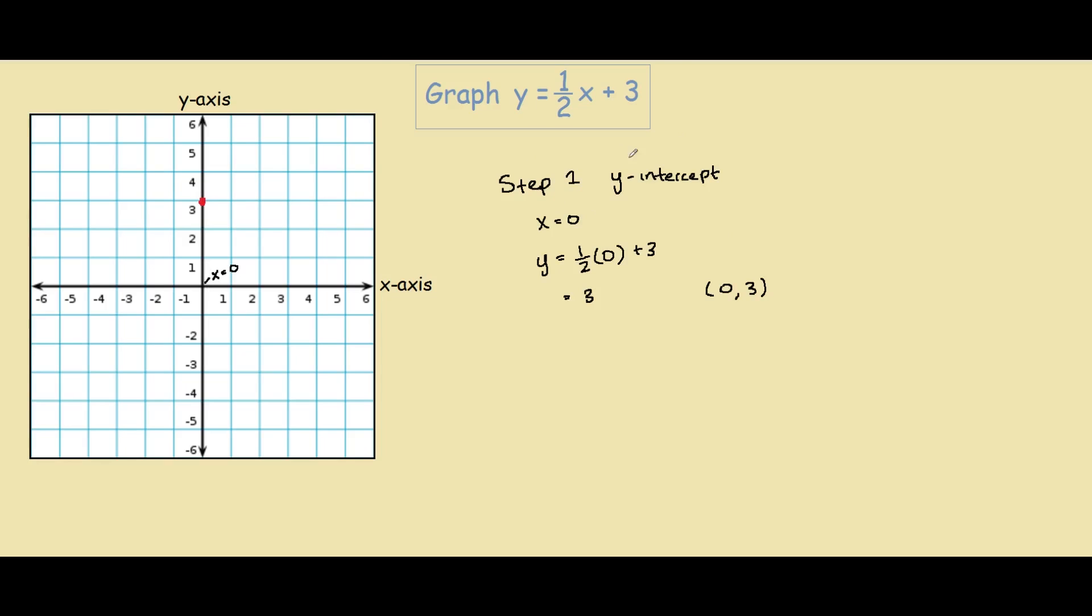Our second point will be found by finding the slope of the graph. To find the slope, we look at the number in front of the x. The technical term for this is the coefficient. The coefficient of x is one-half, so therefore our slope is one-half.